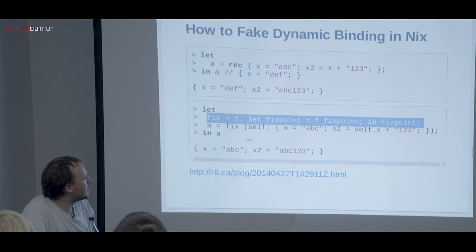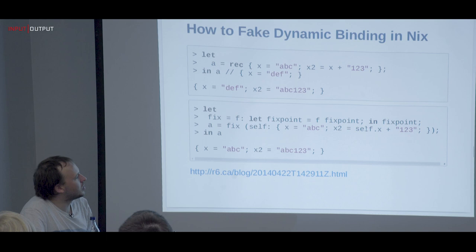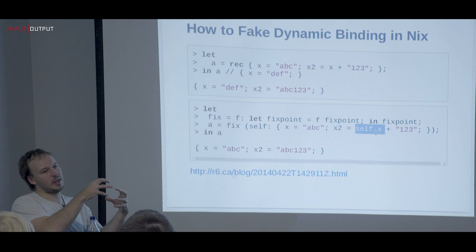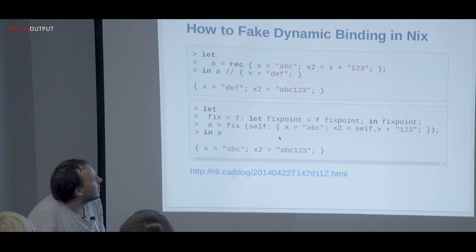Instead of using `rec`, you use `self.x`. Then you can stack these attribute sets together and get them as an input. This is the baseline — one of the parts that's hard to grasp, but the fixed point is the key building block here.